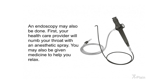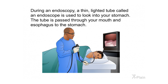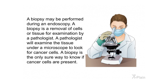An endoscopy may also be done. First, your health care provider will numb your throat with an anesthetic spray and may give you medicine to help you relax. During the procedure, a thin lighted tube called an endoscope is passed through your mouth and esophagus into the stomach. A biopsy — the removal of cells or tissue for examination by a pathologist — may be performed. A pathologist examines the tissue under a microscope; a biopsy is the only sure way to confirm cancer cells are present.